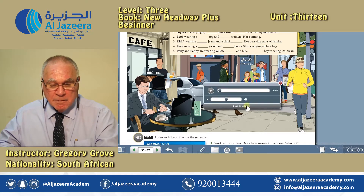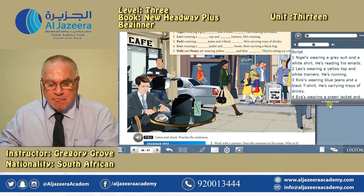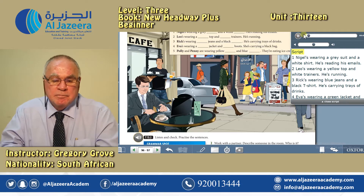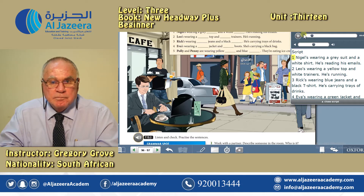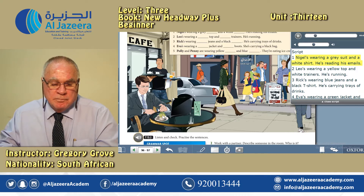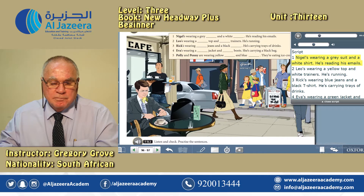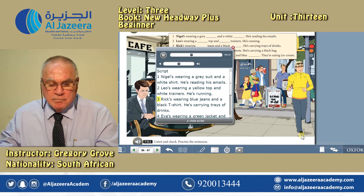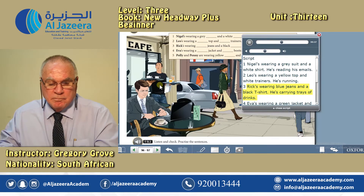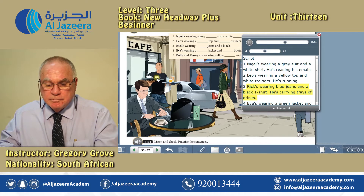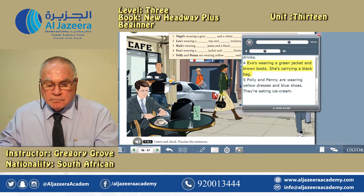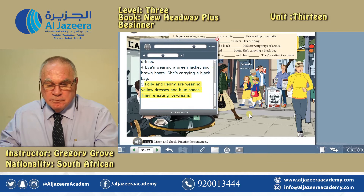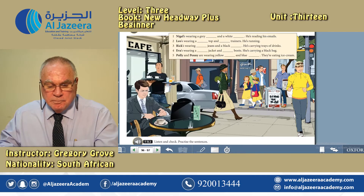Listen and check. Tapescript 13.2 — What are they wearing? 1. Nigel's wearing a grey suit and a white shirt. He's reading his emails. 2. Leo's wearing a yellow top and white trainers. He's running. 3. Rick's wearing blue jeans and a black t-shirt. He's carrying trays of drinks. 4. Eva's wearing a green jacket and brown boots. She's carrying a black bag. 5. Polly and Penny are wearing yellow dresses and blue shoes. They're eating ice cream.